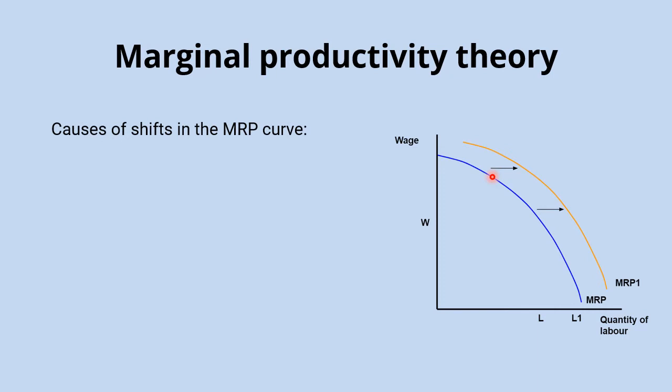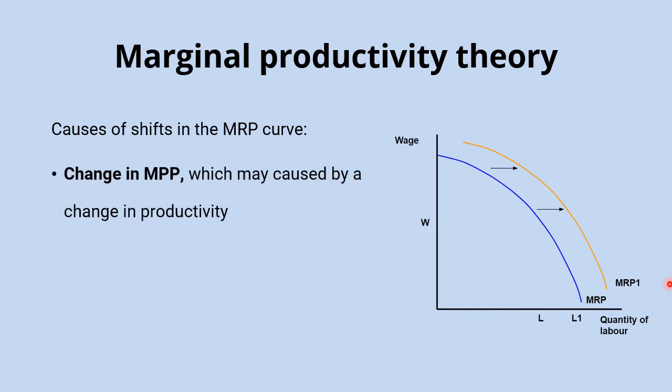In terms of causes of shifts in the MRP curve, remember that MRP is made up of marginal physical product multiplied by marginal revenue. So first and foremost, if the marginal physical product changes, that is going to cause the marginal revenue product to shift. The most obvious cause would be a change in the productivity of workers. If productivity was to go up, that would increase the additional output that an extra worker will produce, therefore increasing the MRP of that worker and shifting the marginal revenue product curve to the right.